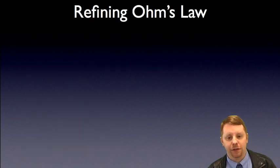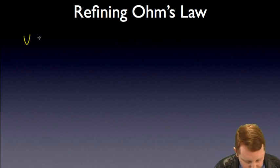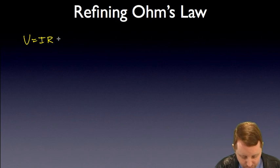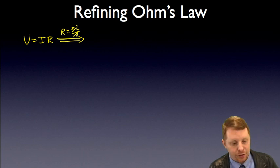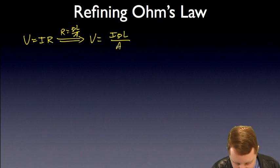Let's refine Ohm's law just a little bit further using what we know. If we start with potential drop equals current times resistance, well, we know that resistance is rho L divided by A. So, I could write this as potential equals current times resistivity times length of our resistor divided by the area.